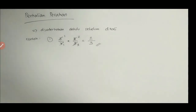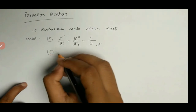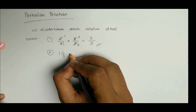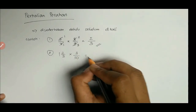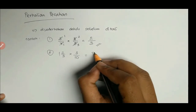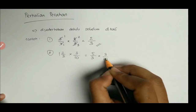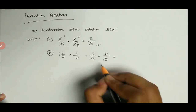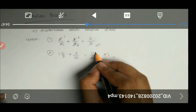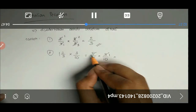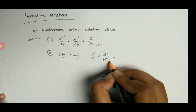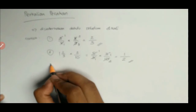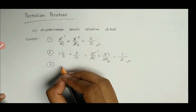Contoh berikutnya dengan pecahan campuran: 1 dan 2/3 dikali 3/10. Ingat langkah pertama: harus dijadikan pecahan biasa terlebih dahulu. 1 dan 2/3 diubah menjadi 5/3. Baru 5/3 dikali 3/10 disederhanakan: pembilang dengan penyebut. Hasilnya 1 × 2 = 2 per 1 × ... — ini yang paling sederhana, yaitu 1/2.